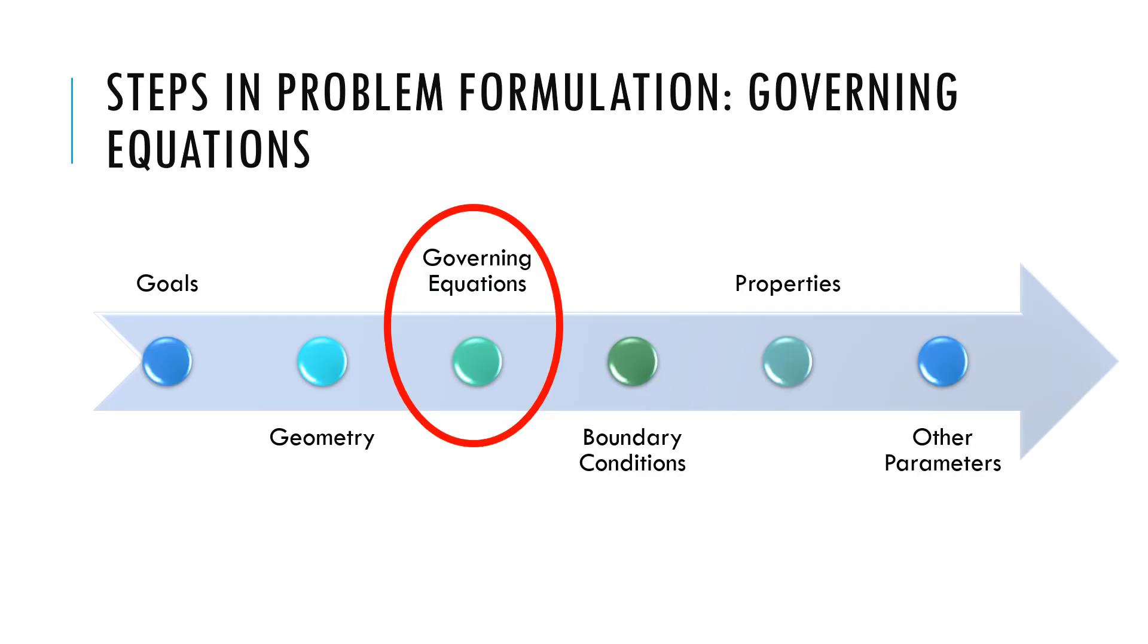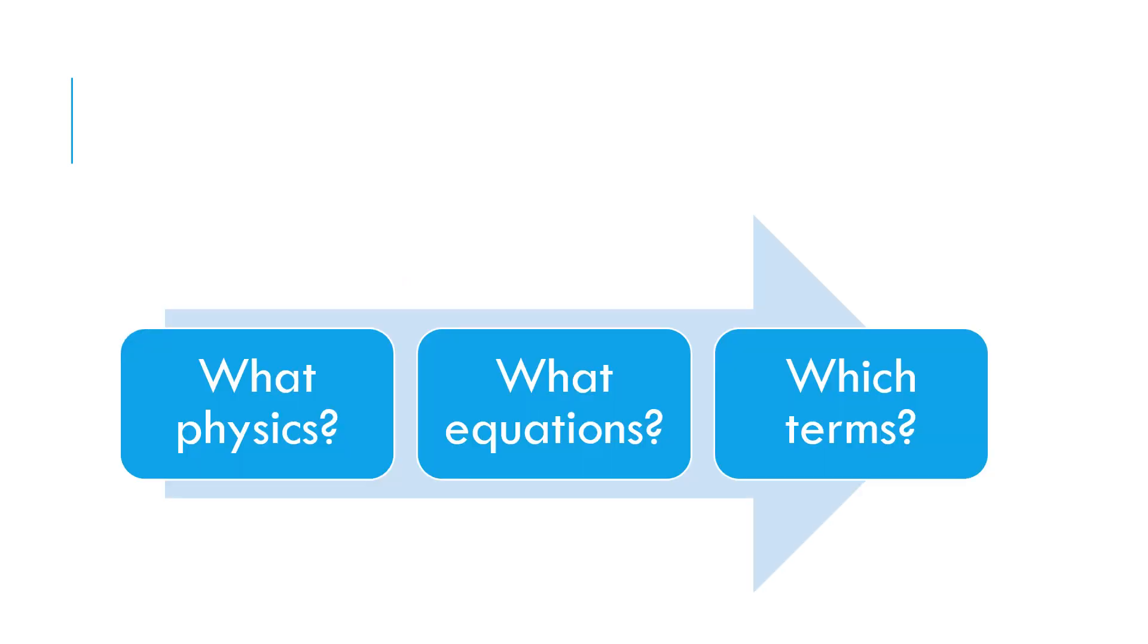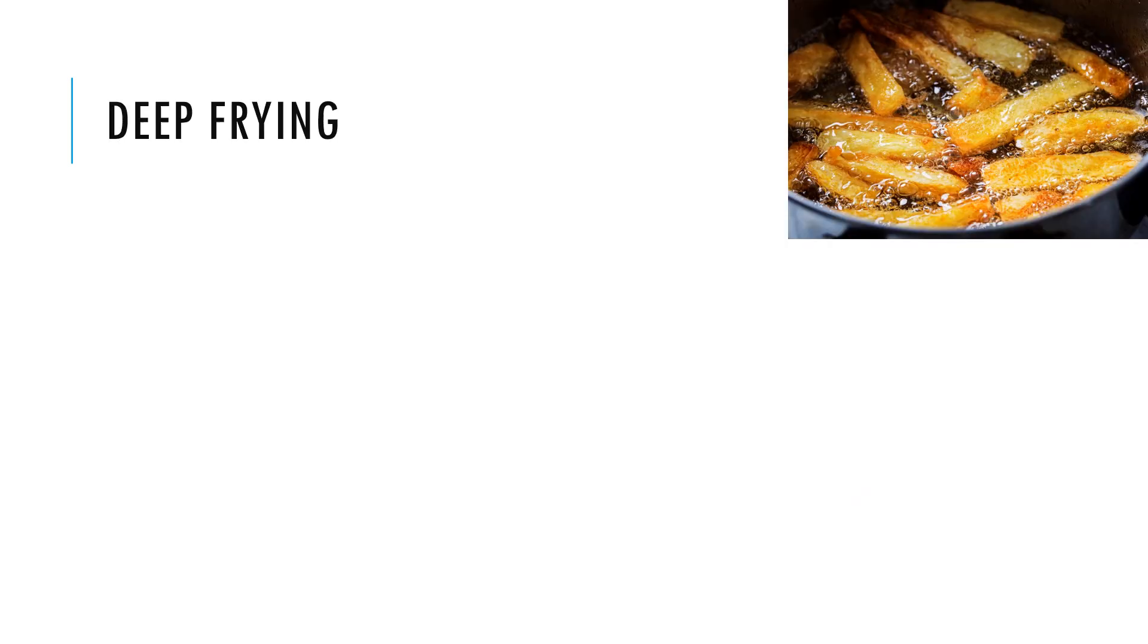One of the most important steps is the choice of governing equations that we will choose to represent the real physical process. Here we ask questions like what physics, what equations do we choose for that physics, and which terms in those equations do we keep and which ones do we drop?